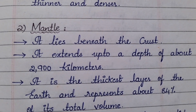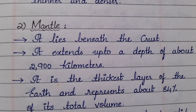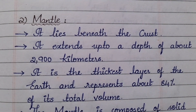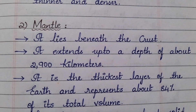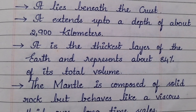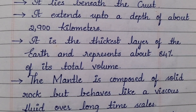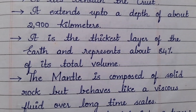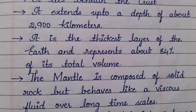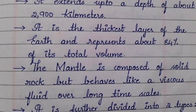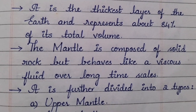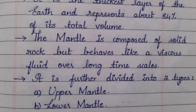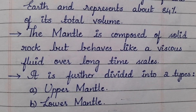Coming to the second layer — the mantle. It lies beneath the crust and extends up to a depth of about 2,900 kilometers. It is the thickest layer of the earth and represents about 84% of its total volume. The mantle is composed of solid rock but behaves like a viscous fluid over long time scales. This mantle layer is further divided into two types: upper mantle and lower mantle.